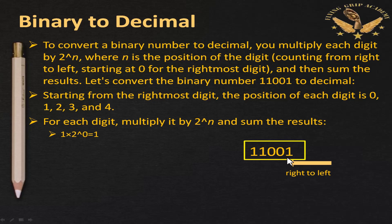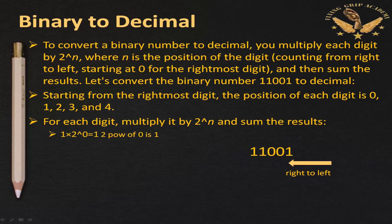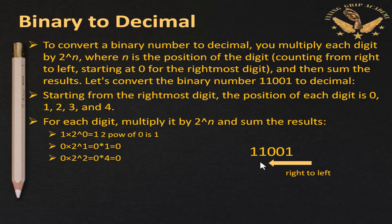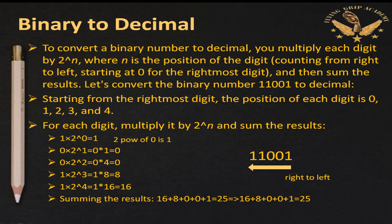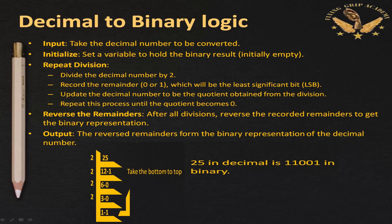Taking 11001 from right to left: 1 × 2^0 = 1; 0 × 2^1 = 0; 0 × 2^2 = 0; 1 × 2^3 = 8; 1 × 2^4 = 16. Now summing all results: 16 + 8 + 0 + 0 + 1 = 25. So the decimal equivalent of binary 11001 is 25.